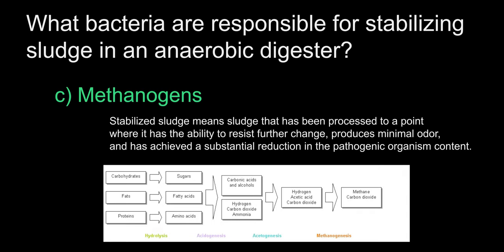The answer is C, methanogens. Methanogens play a vital role in anaerobic environments by removing excess hydrogen and fermentation products that have been produced by other forms of anaerobic respiration. If you look at the on-screen graphic, you can see they play the final part in digesting sludge.